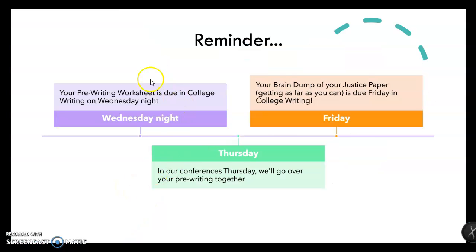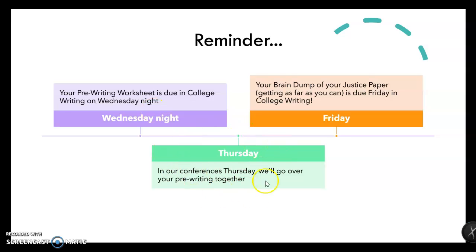As a reminder, your prewriting worksheet is due in college writing on Wednesday night. Your restorative and retributive synthesis paper is due Tuesday night, and the gray sheets for restorative and retributive justice are due then too — which by now you should be really good at and able to do, no problem. Wednesday night, the prewriting worksheet is due. Thursday, we're going to have individual conferences where I go over the prewriting worksheet with you. And then Friday, your brain dump of your justice paper is due in college writing — getting as far as you can.